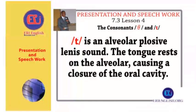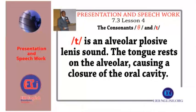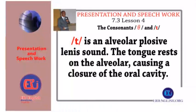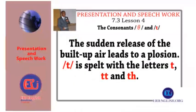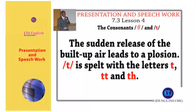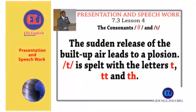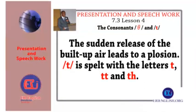T is an alveolar plosive, linear sound. The tongue rests on the alveolar, causing a closure of the oral cavity. The sudden release of the built-up air leads to an explosion. T is spelled with the letters T, TT, and TH.